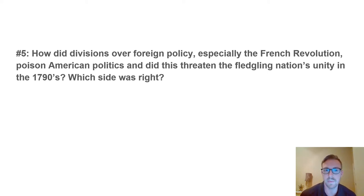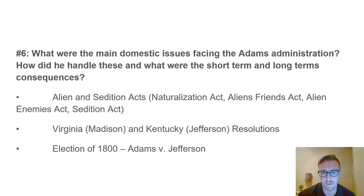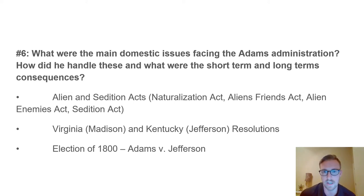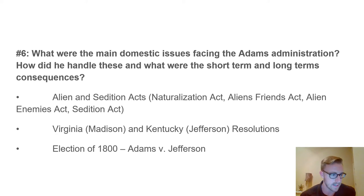There was a moment of uncertainty about who was next, given the political division in the country. The second president of the United States would be John Adams—the Vice President—who won the election and very quickly had to deal with issues carried over from the Washington presidency. The last discussion question covers: what were the main domestic issues facing the Adams administration, how did he handle them, and what were the short-term and long-term consequences? An interesting situation occurred right after Adams became president: the XYZ Affair.